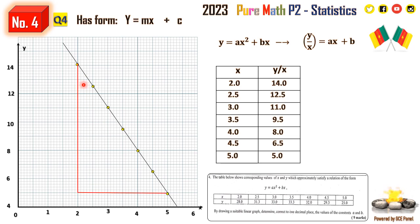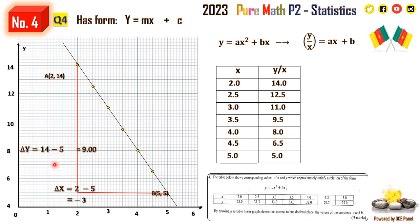We need a gradient — a change in y over change in x. We make a large triangle to get a change that is significantly clear and accurate. Taking point A where x is 2 and y over x is 14, and point B at 5 and 5: change in y is 14 minus 5 equals 9, and change in x is 2 minus 5 equals negative 3.